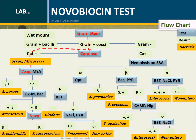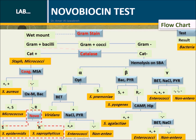Flow chart: The flow chart shows that gram stain, catalase, and coagulase tests are prerequisites for the novobiocin test. The tested bacteria should be gram-positive cocci, catalase positive, and coagulase negative.